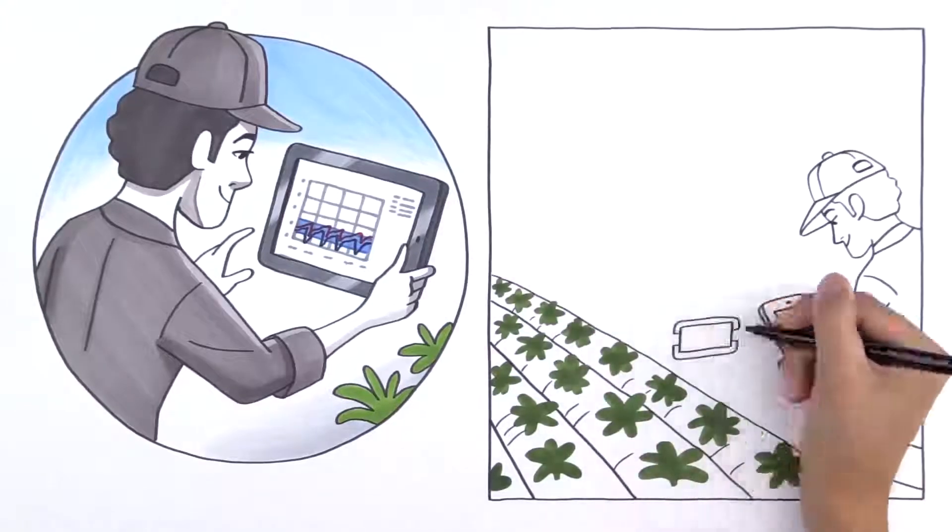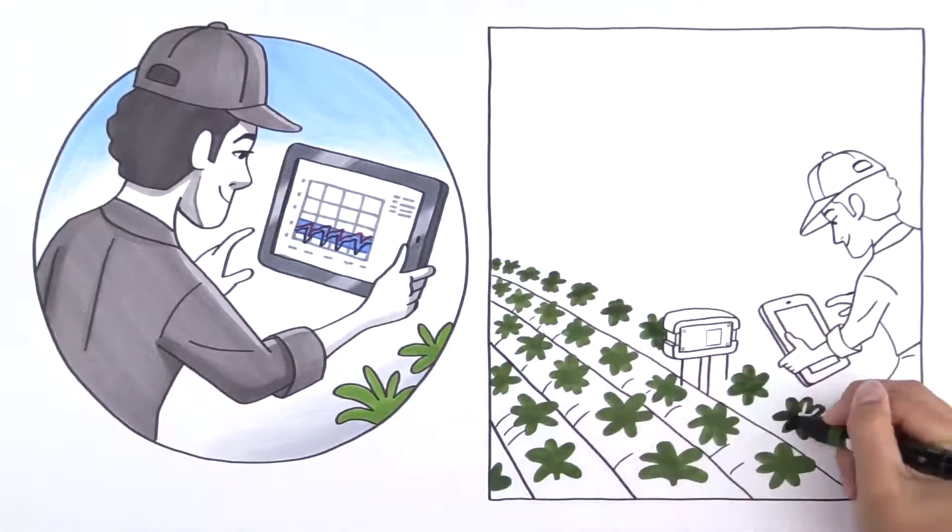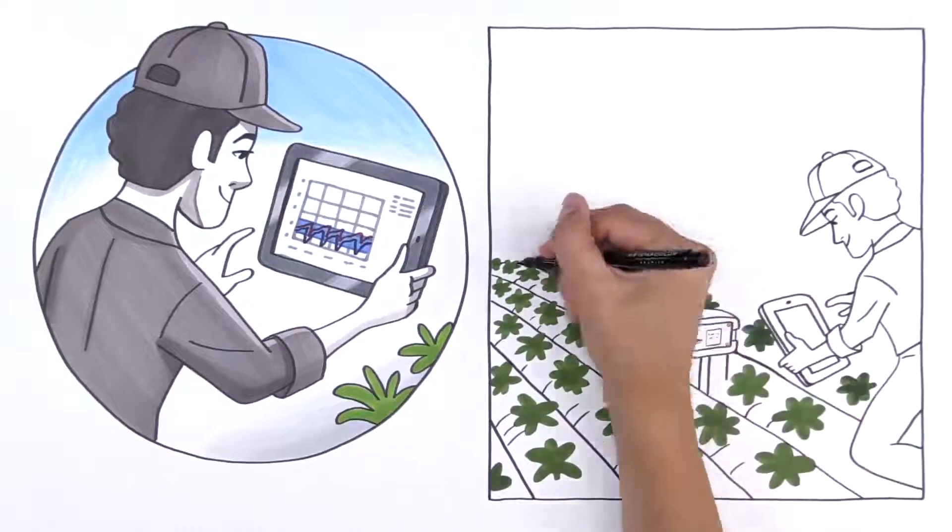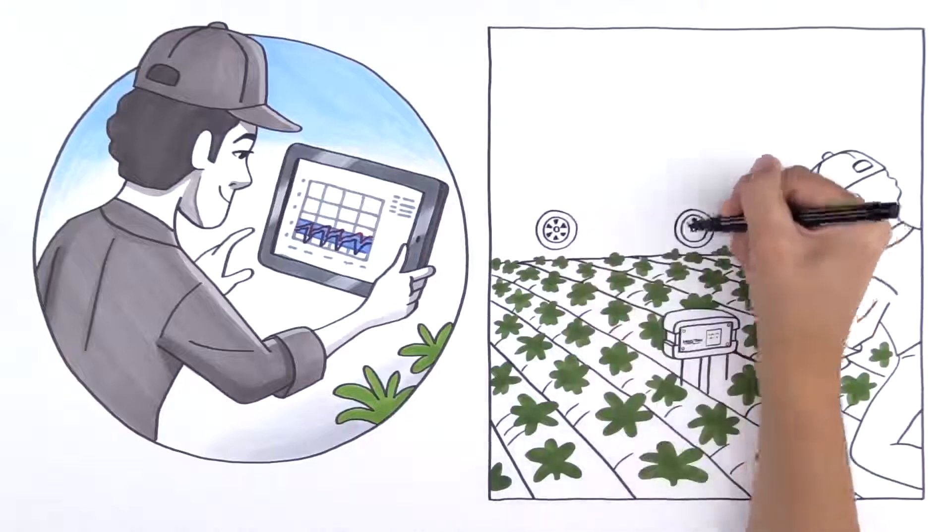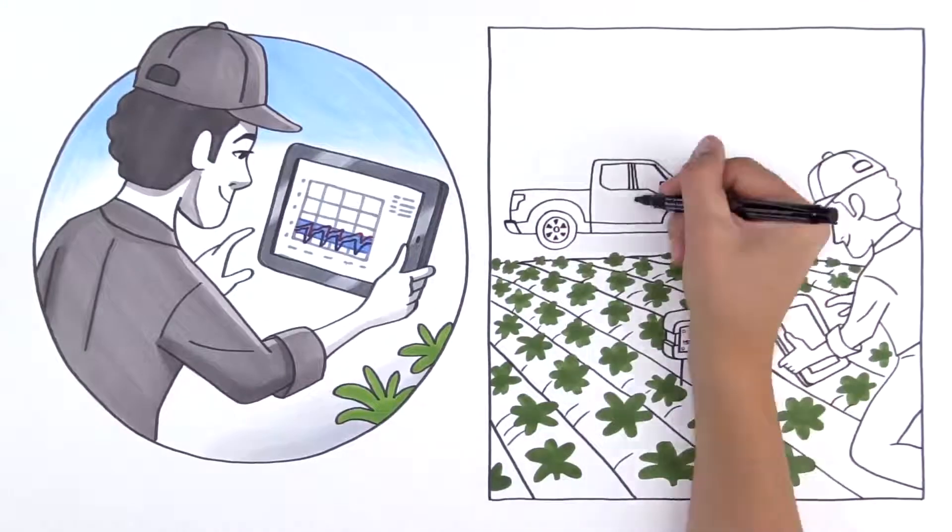Managing soil tension in real time allows growers to anticipate stress before it occurs. It also helps maximize photosynthesis by alerting you when and where to apply the correct amount of water and fertilizer.